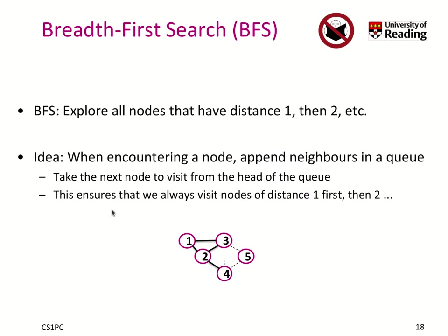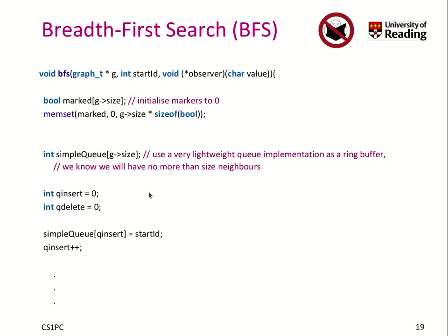Now, back to our first implementation of the traversal, which is the breadth-first search, or BFS. We said we try to explore all nodes that have distance 1, then distance 2, and so on. The idea is, when we encounter a new node or vertex, we append its neighbors to a queue. And every time we are done with our processing, we take the next node to visit from the head of the queue. This ensures that we visit nodes of distance 1 first, then distance 2, distance 3, and so on.